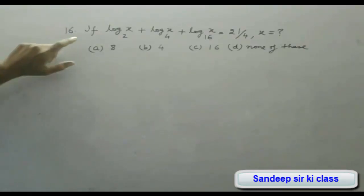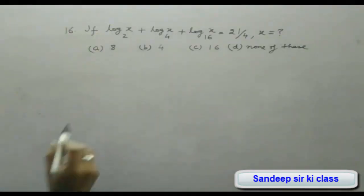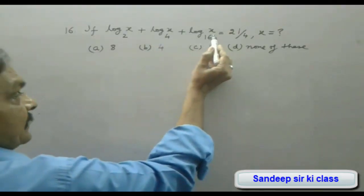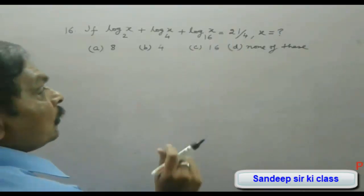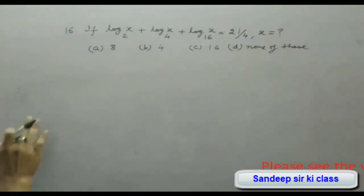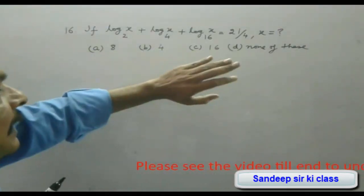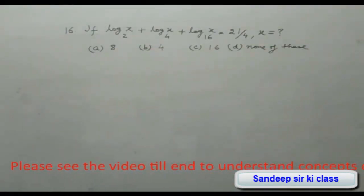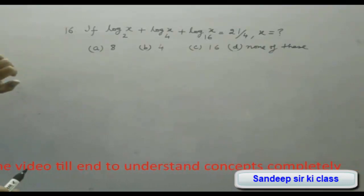Question number 16: if log x to the base 2 plus log x to the base 4 plus log x to the base 16 equals 21/4, what is the value of x? The options given are 8, 4, 16, and option D is none of these.